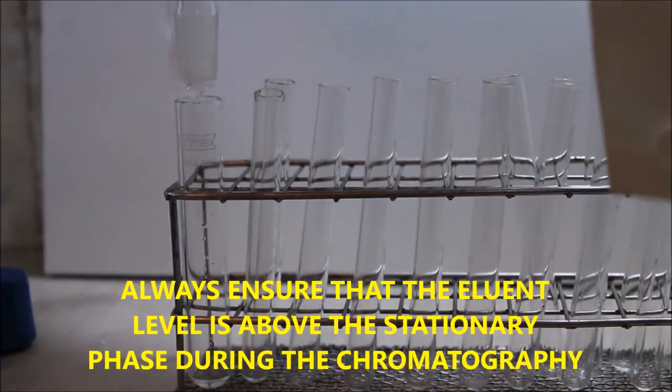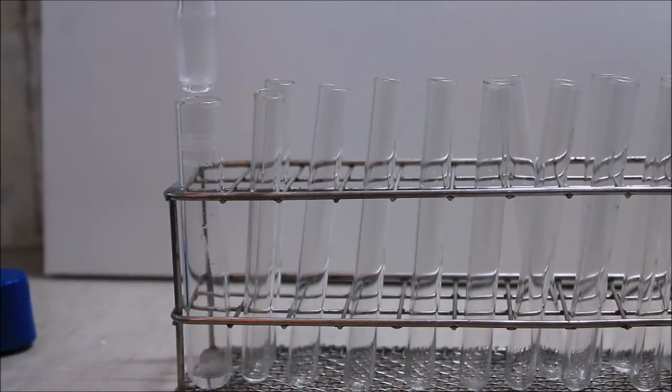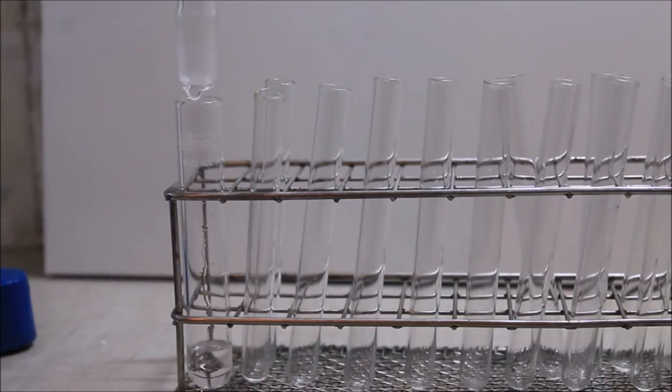Then the mobile phase coming out of the end of the column is collected in small test tubes. In this case, the chromatography can be followed by the color of the solution coming out from the column. In the case of colorless analytes, the chromatography is typically followed via TLC. Pressure can be applied to accelerate this process; this is known as flash chromatography.